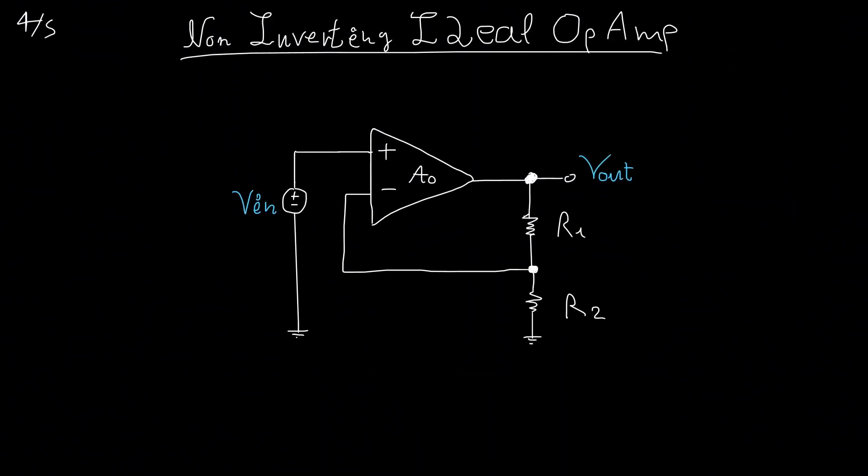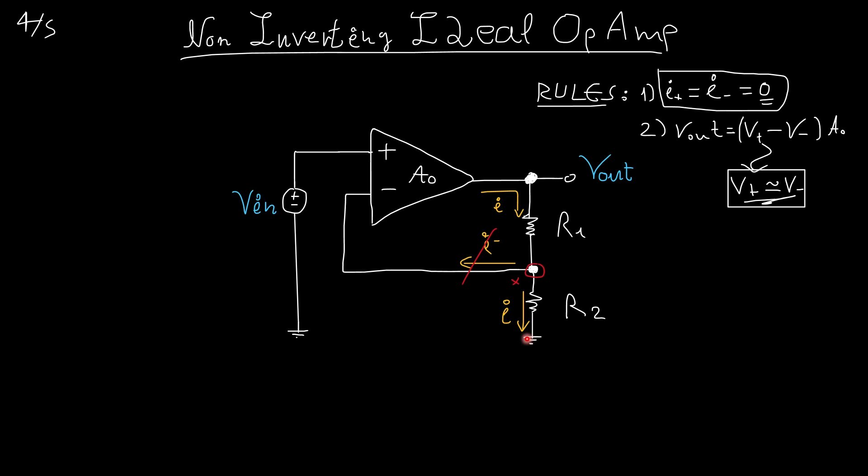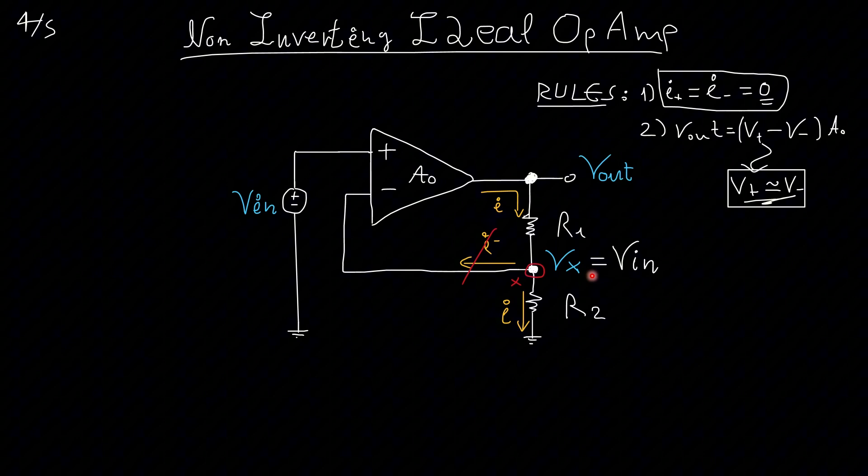Moving on now to the non-inverting op-amp, we have a little bit of different configuration. Again, notice that we have a negative feedback. And what we have now is two resistors connected like this. Again, we have the same rules. Now, we have a current flowing from here to here. Can it flow like this? No. Again, we cannot violate this rule, but it can flow from here all the way to the ground. I will call this node, node X, and I'm going to say that Vx is equal to Vin.